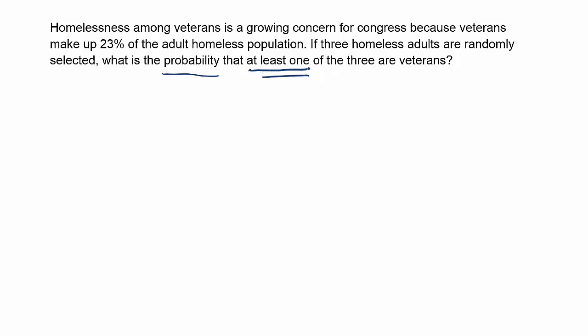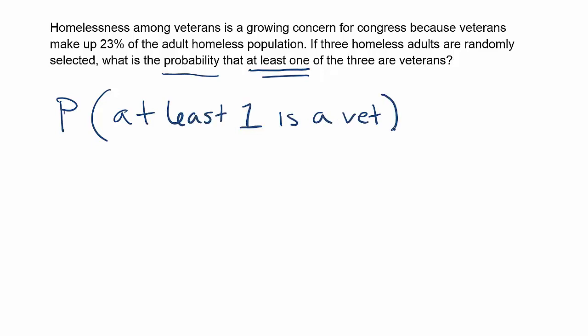Let's finish reading the problem — what's the probability that at least one of the three selected are veterans? If I write out the probability statement, I want to use the phrase 'at least one' because that's what it's asking for. So the problem reads: the probability that at least one is a veteran. Because I have this phrase 'at least one,' there's a very simple approach to solve the problem.